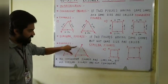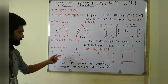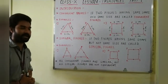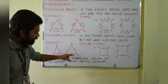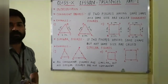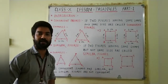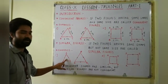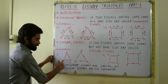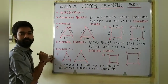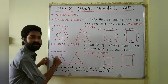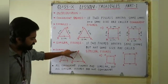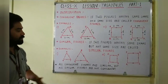Look at the given example. Here are two triangles: triangle ABC and triangle PQR. All three sides of triangle ABC are equal, so it is an equilateral triangle. All three sides of triangle PQR are also equal, so it is also an equilateral triangle. But triangle ABC is smaller compared to triangle PQR. Both triangles have the same shape but different sizes. That's why triangle ABC and triangle PQR are similar triangles.